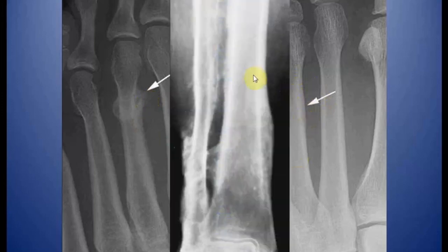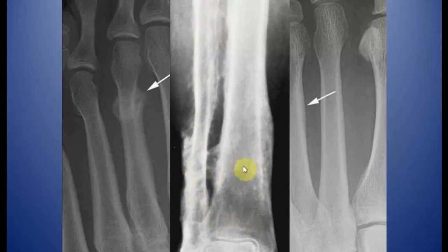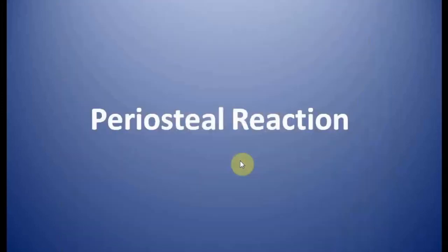Periosteal reaction can also be seen in chronic venous stasis, leading to a disorganized type of periosteal reaction in the lower tibia and fibula. That was all about periosteal reaction. I hope you have enjoyed the video. Thank you.